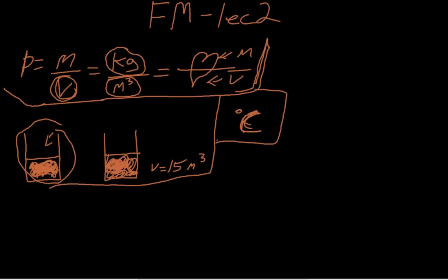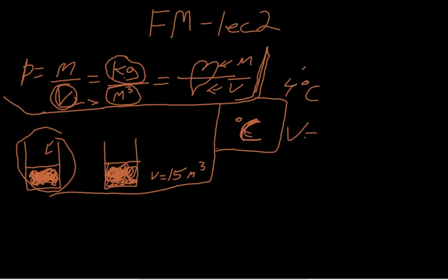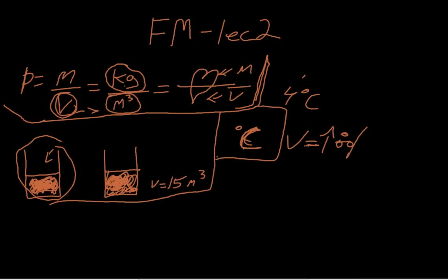Water at 4 degrees Celsius has the highest density. As it becomes cooler — 3, 2, 1, 0 degrees — the density actually starts to decrease. That's sort of why ice floats in Antarctica. So if the mass is the same and we increase the temperature, volume increases. And if volume increases, then the density would decrease. That's true for most liquids: when they become hotter, their density usually decreases.